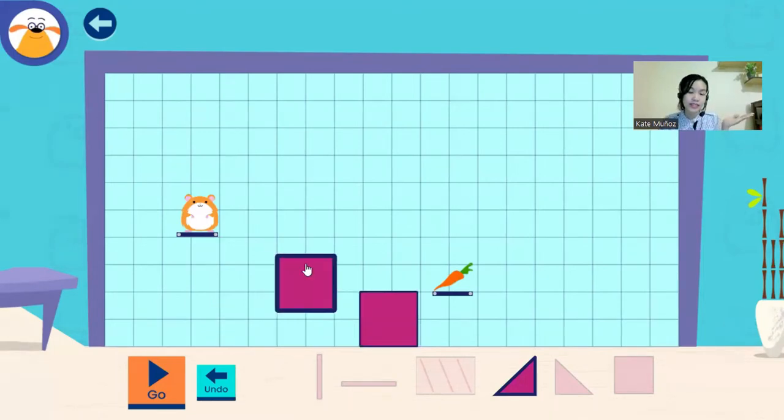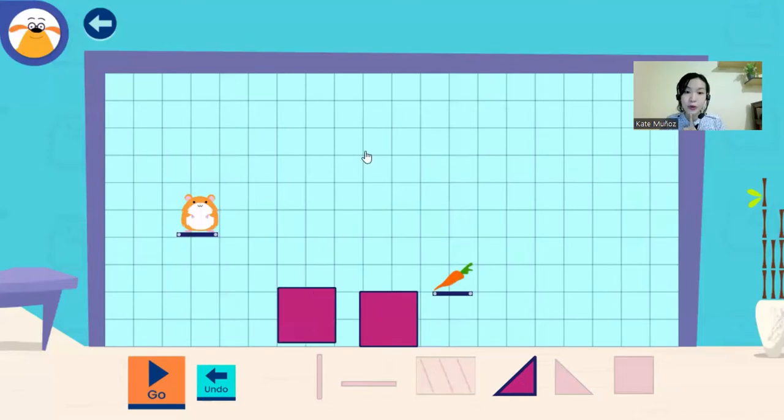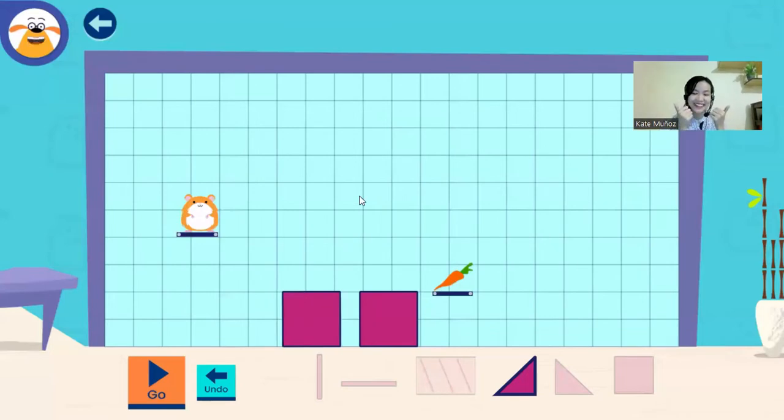What is this? It's a square. Square. Don't forget to tap go when you're ready to let the hamster run. Good job.